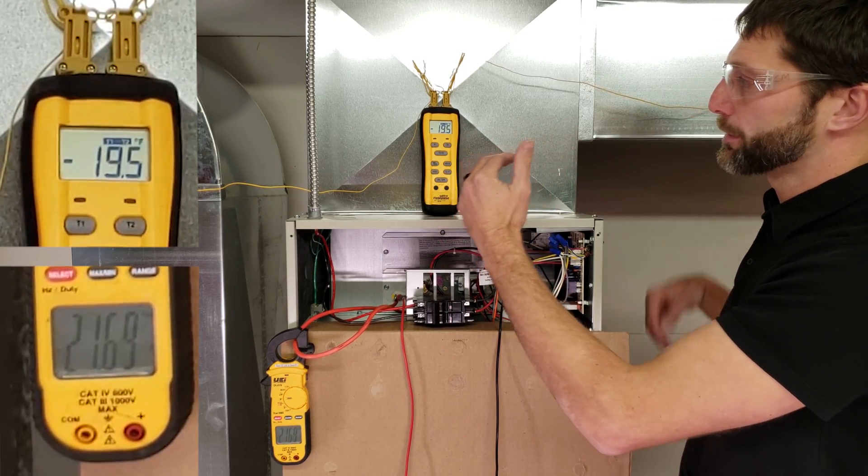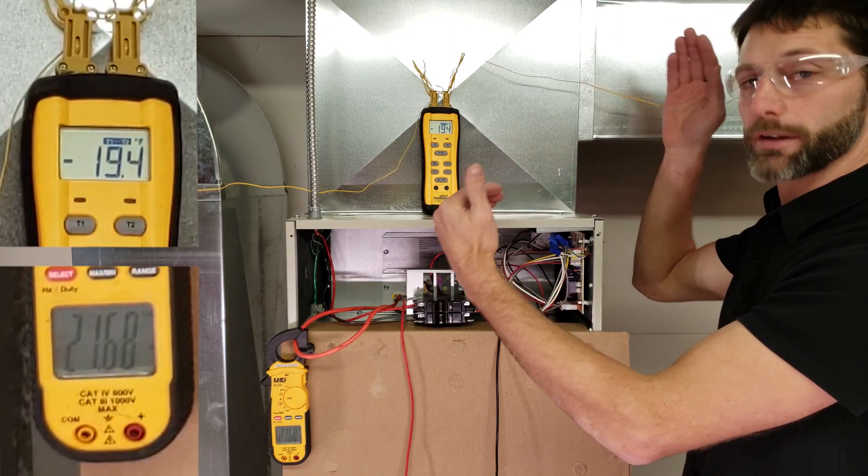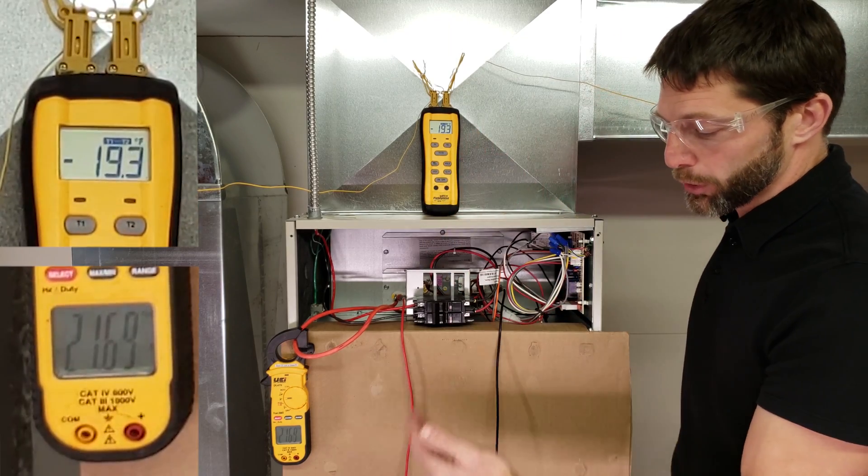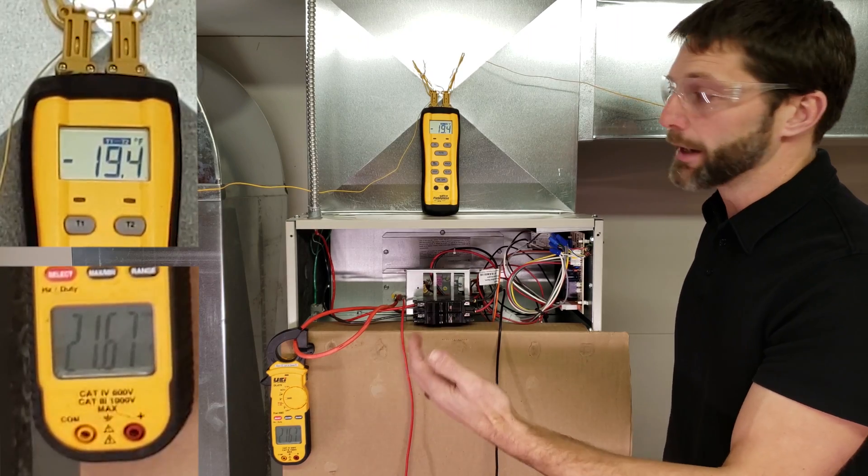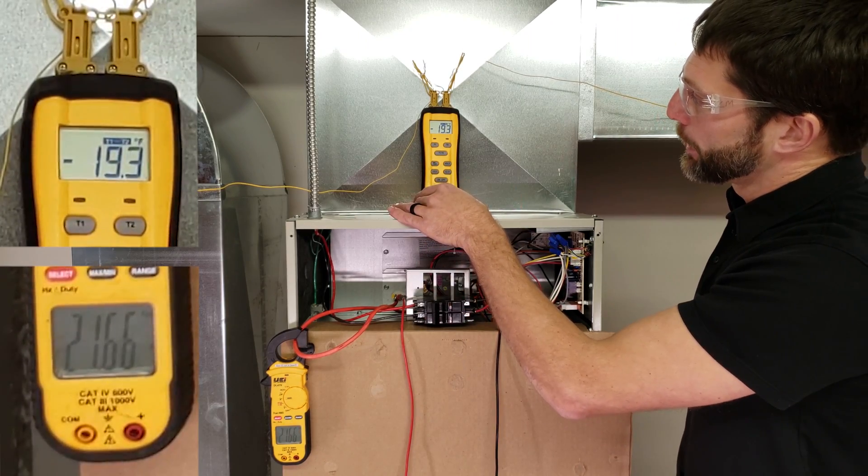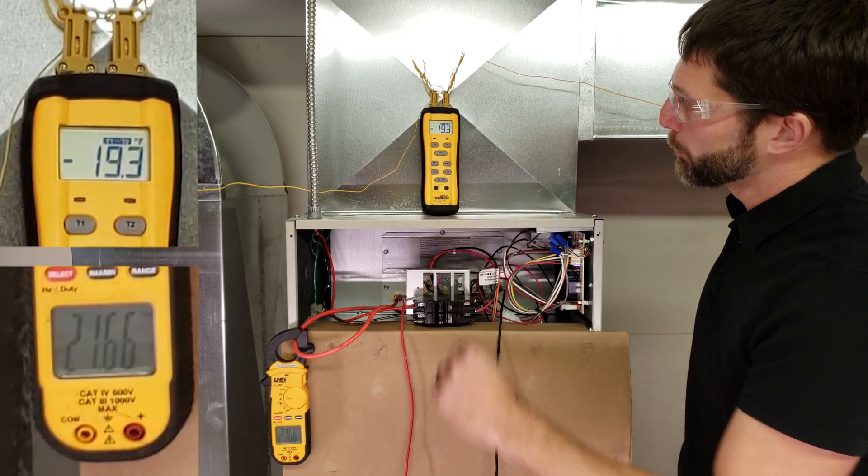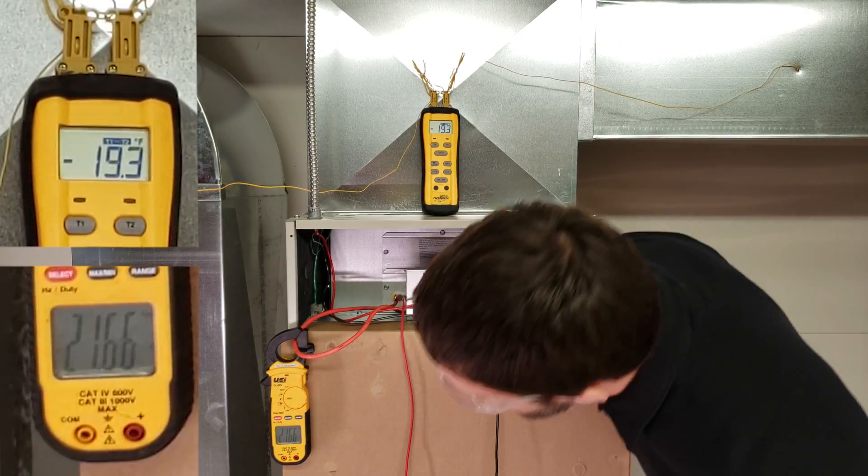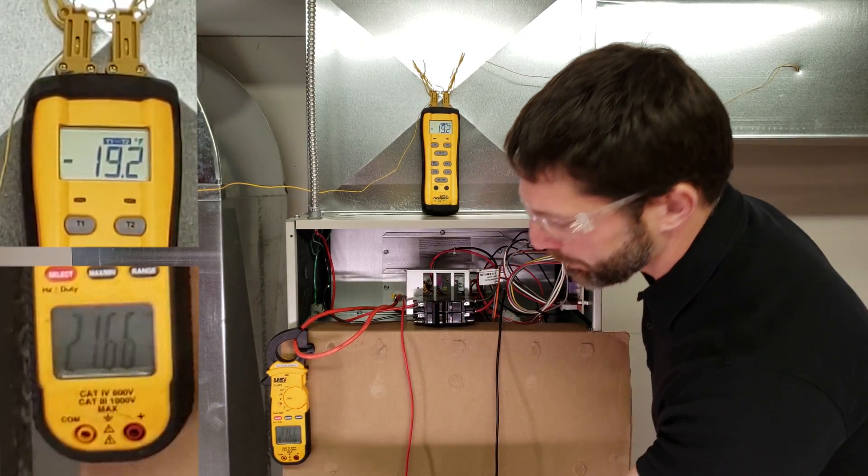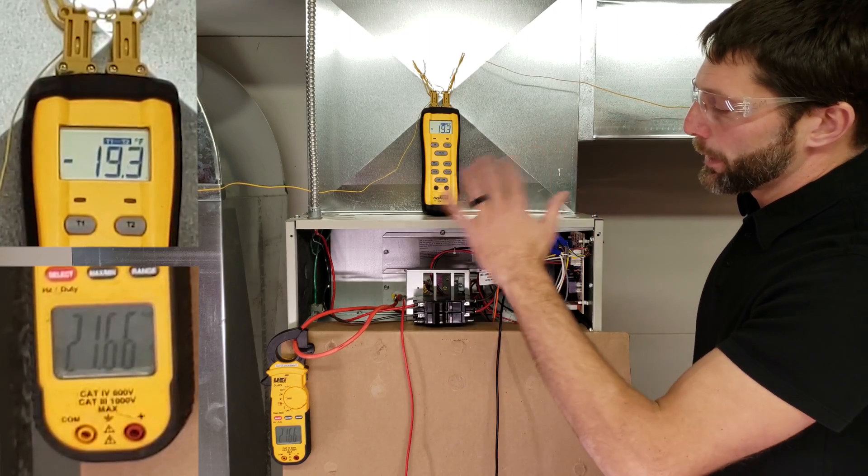But the thing is, what we want to keep in mind is if that temperature differential keeps rising, then that means that our blower motor speed is not high enough, or we have an airflow restriction or something like that. So right now we're reading right about 19.3 degrees as a temperature differential, and 21.65. So that's what we got right there.